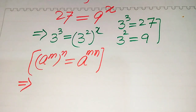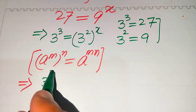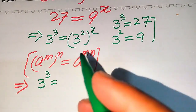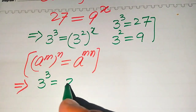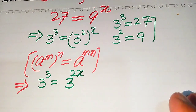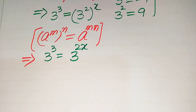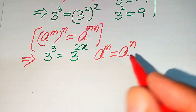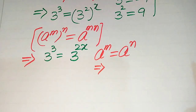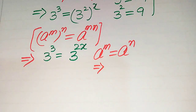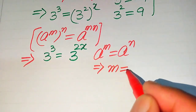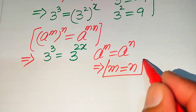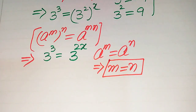Our right hand side is written as: 3 to the power of 3 stays as it is, and since we have exponent to exponent, these two are multiplied by each other, giving us 3 to the power of 2x. Now we use another exponent law: if a to the power of m equals a to the power of n, and the bases on both sides are the same, we equate the exponents, so m equals n.